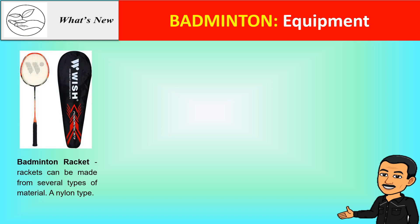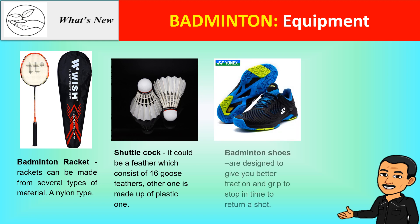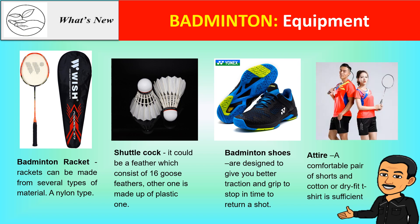Badminton racket: Rackets can be made from several types of material, including nylon type. Shuttlecock: It could be a feather type which consists of 16 goose feathers, or one made of plastic. Badminton shoes are designed to give you better traction and grip to stop in time to return a shot. Badminton attire: A comfortable pair of shorts and cotton or dry-fit t-shirt is sufficient.